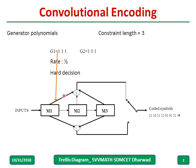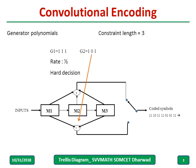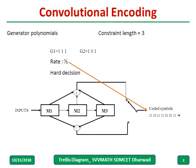Here, g1 = 111 indicates all three registers are connected. For g2, the first connection is present, the second is not (hence 0), and the third is connected (hence 1), giving g2 = 101. If g1 and g2 are given, you should be able to draw this diagram, and vice versa. For every 1 input bit, we have 2 output bits.